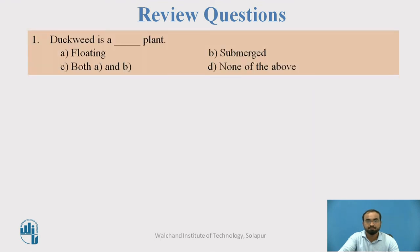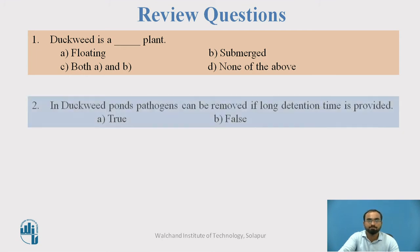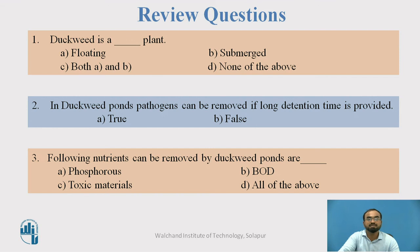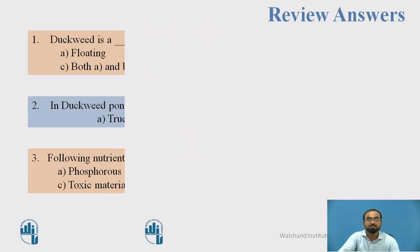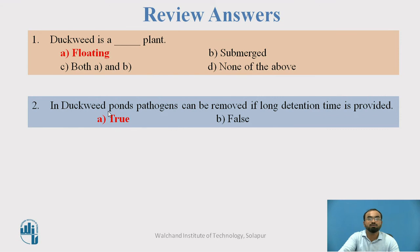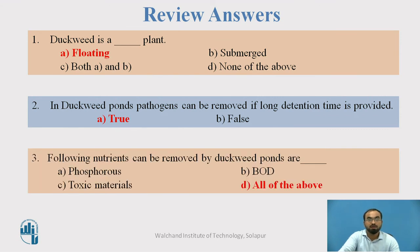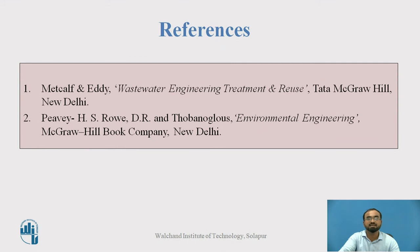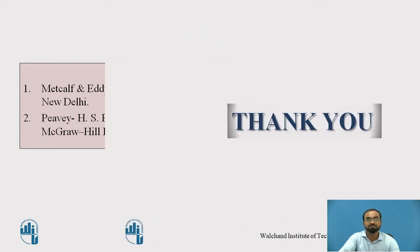Review questions: Duckweed is a blank plant — is it floating, submerged, both, or none of the above? In duckweed ponds, pathogens can be removed if long detention time is provided — is this true or false? The answers: duckweed is always a floating plant. In duckweed ponds, pathogens are always removed if long detention time is given. A lot of nutrients can be removed in duckweed ponds, including phosphorus, BOD, and toxic materials. These are the references used to make this video. Thank you.